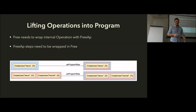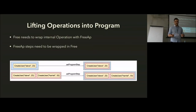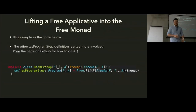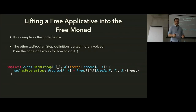Basically, for the free monad — the blue box — we need to embed a free applicative inside it and put the operation inside the free applicative. For the second approach, we just wrap a free monad around it using Free.liftF and pass our free app into that.